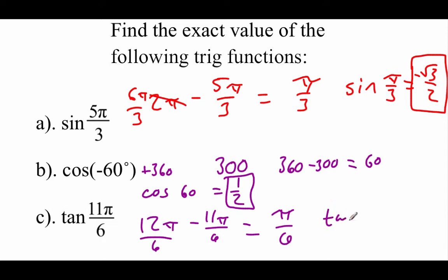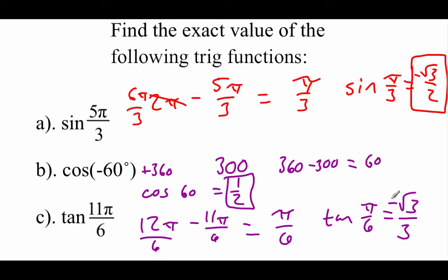If we're doing the tangent of π over 6, we end up getting √3 over 3, and this is a fourth quadrant angle again. Tangents should be negative in the fourth quadrant, so we get negative √3 over 3.